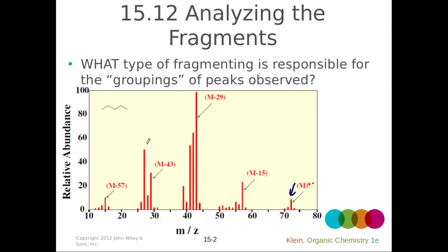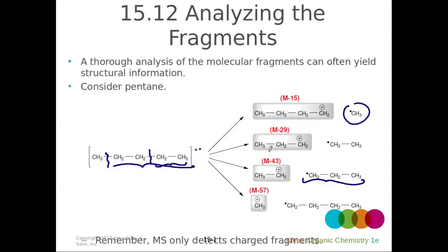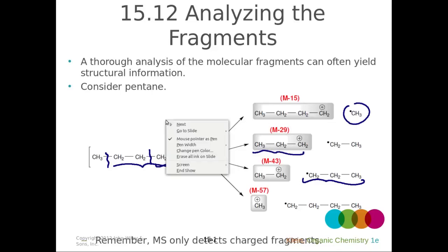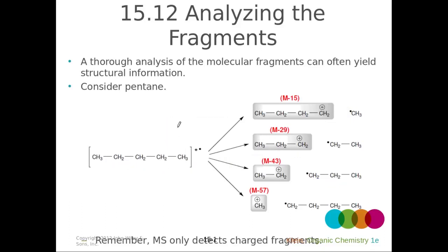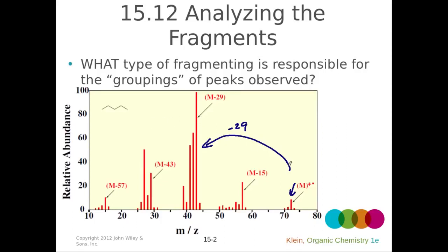The M−29 peak — loss of a propyl group — is the base peak on the spectrum. Why? It's statistics: the molecule can fragment at two different positions and in each case lose a propyl group, so M−29 becomes the base peak.